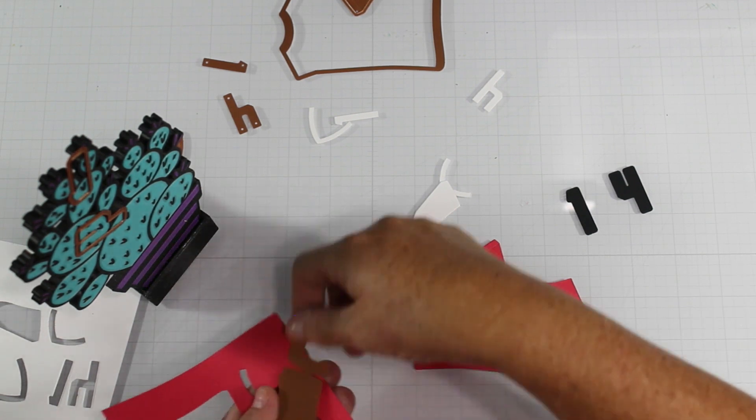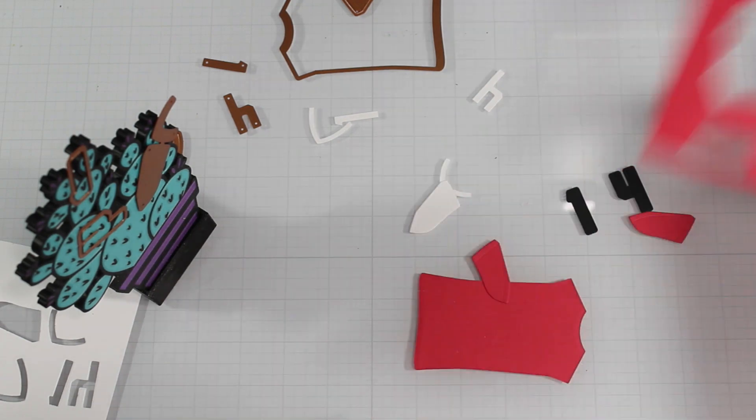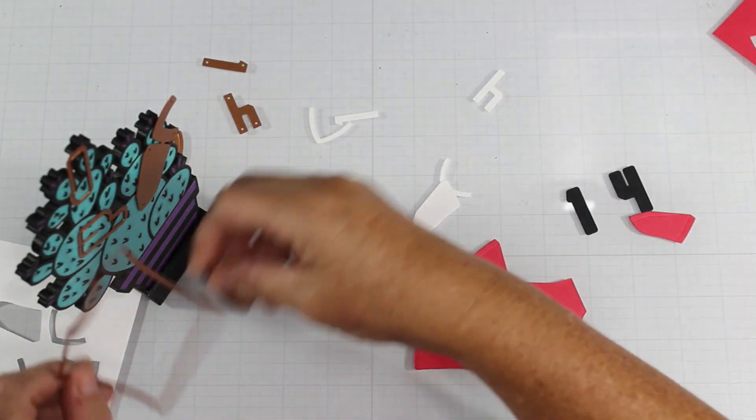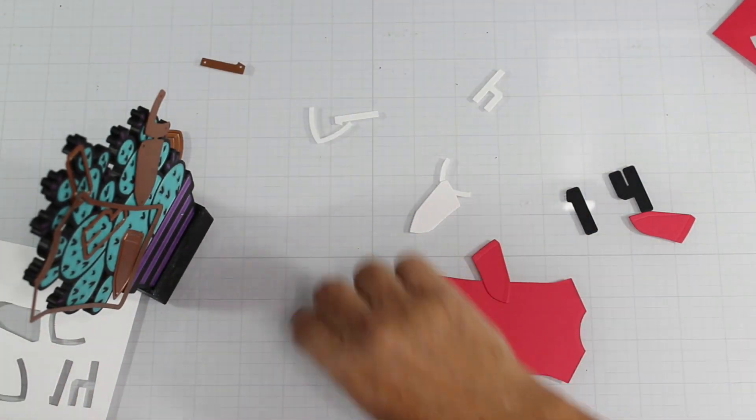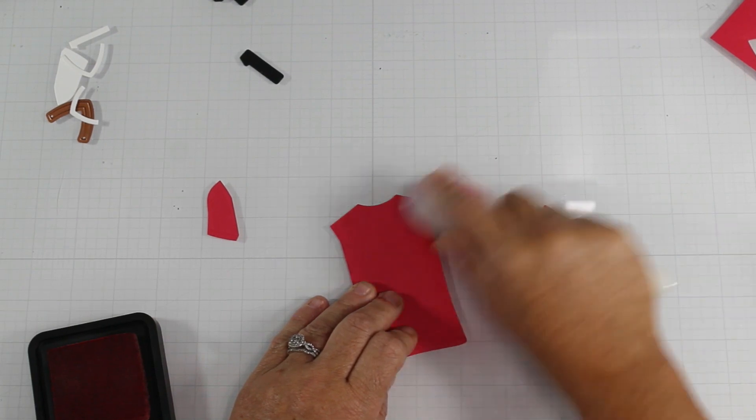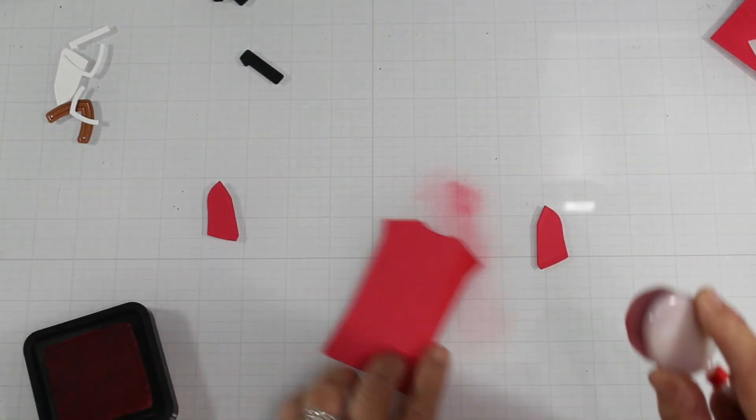So I die cut everything out, and then you're going to see on the screen there that I am using a magnetic die holder from Prickly Pear Stamps, and that is a super strong magnet to hold everything in place.